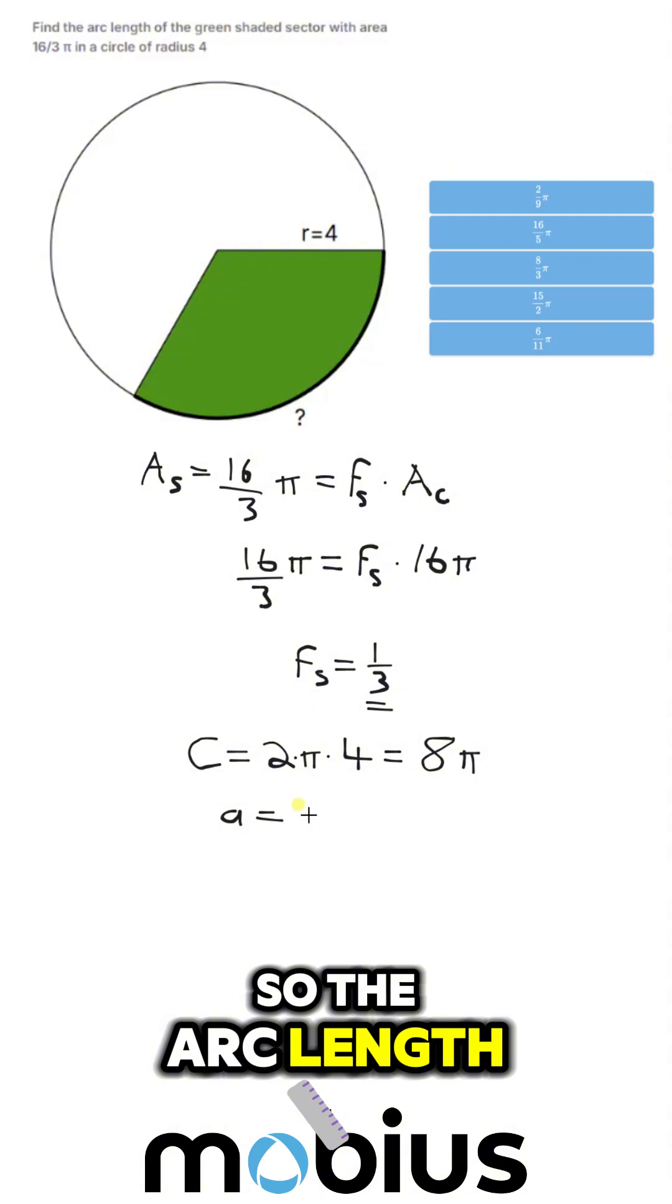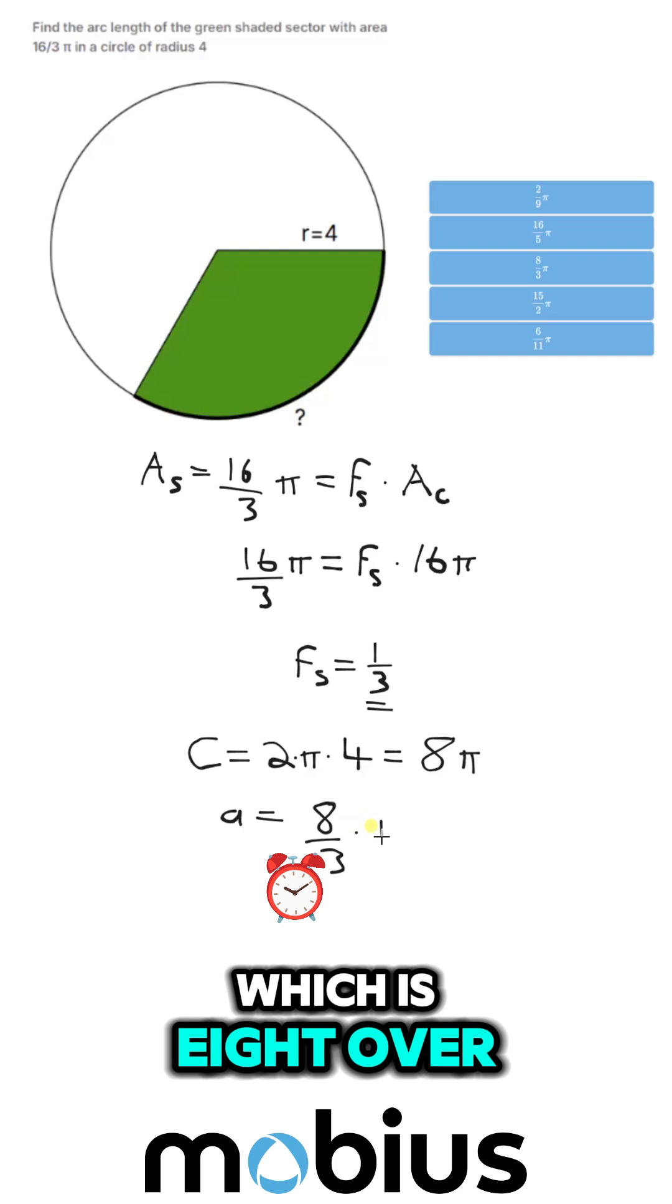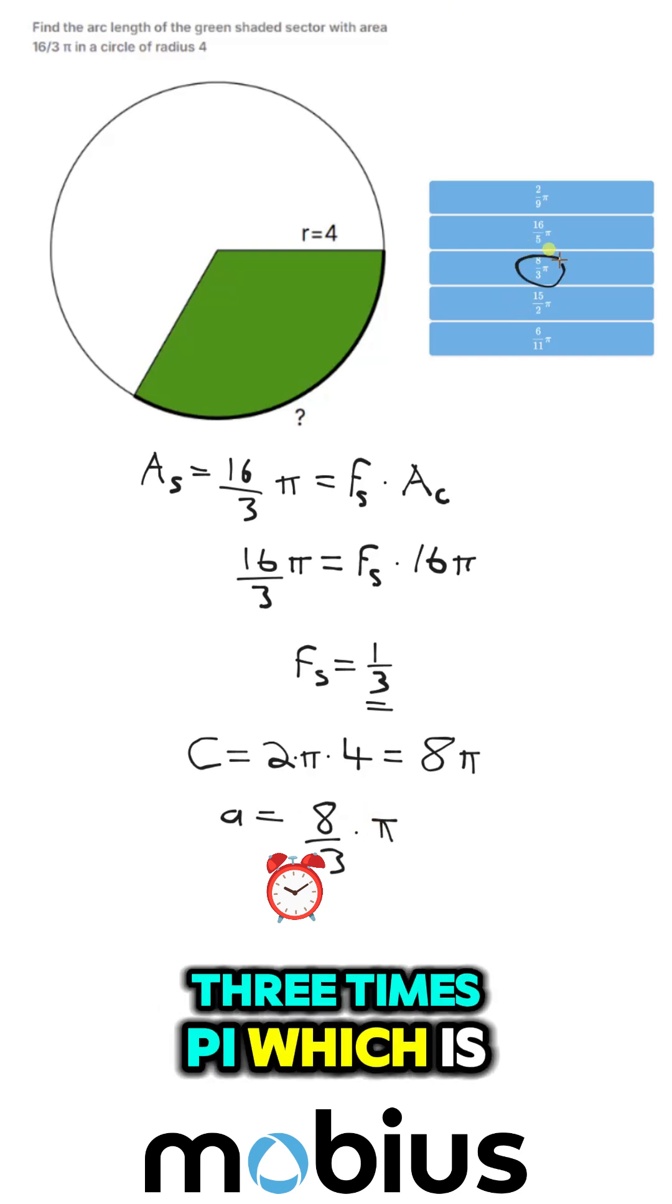so the arc length is equal to 1 third of 8 pi, which is 8 over 3 times pi, which is our answer.